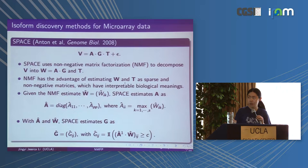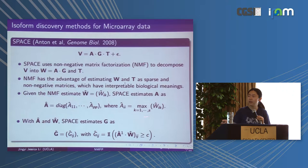Given the decomposition, we get an estimate W-hat. To further recover A and G: for every row of W they take the maximum as the diagonal entry of A-hat, since A is a diagonal matrix. Then G-hat is estimated by taking the inverse of A times W and applying a threshold to make it binary. That is how they estimate A-hat and G-hat.